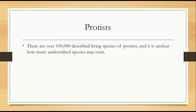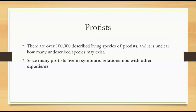There are over 100,000 described living species of protists, and likely many more. It's very, very likely that there are many more undescribed species of protists. It's really unclear how many more undescribed species might exist, and the reason for that is many protists live in symbiotic relationships with other organisms, so it's just going to be hard to find them.